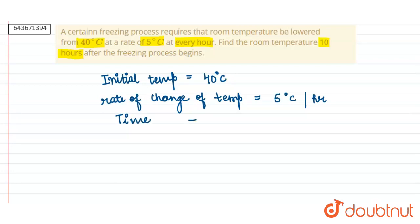Time is equals to 10 hours. So here in 10 hours, the temperature would reduce by 5 into 10, that is 50 degrees Celsius.